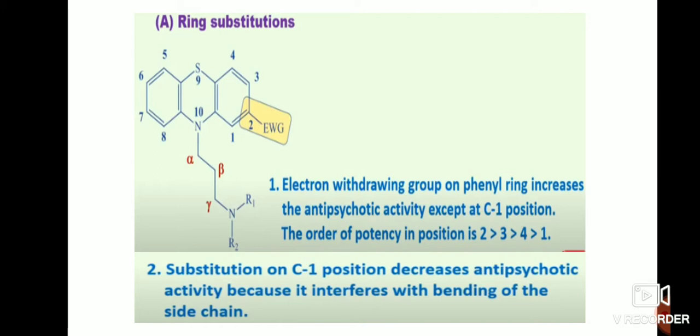The third position has the next level of activity, the fourth position follows, and the first carbon position has the least activity. Substitution on the C1 position decreases antipsychotic activity. If any substituent is present at the first position, it may decrease antipsychotic activity because it interferes with bending of the side chain.